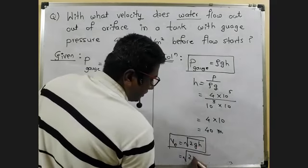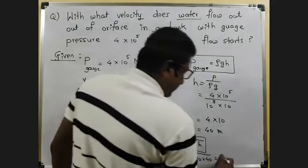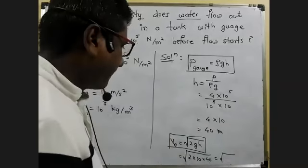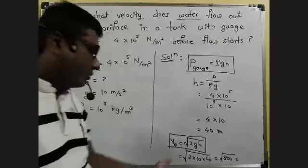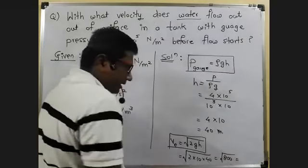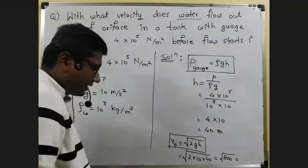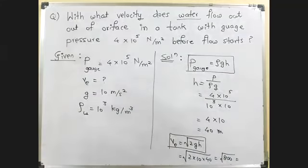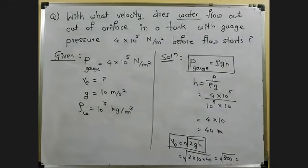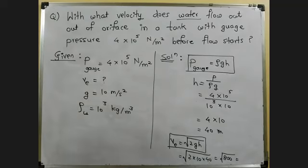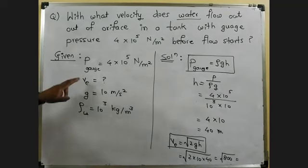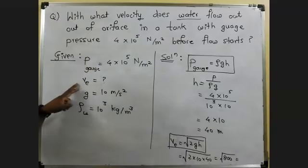Speed of efflux is under root 2 times g times height. Under root 2 times 10 times 40, which is under root 800. Approximately this comes out to be about 28 meters per second. You may use calculator and get the answer. Everyone understood gauge pressure, speed of efflux? And we are done.